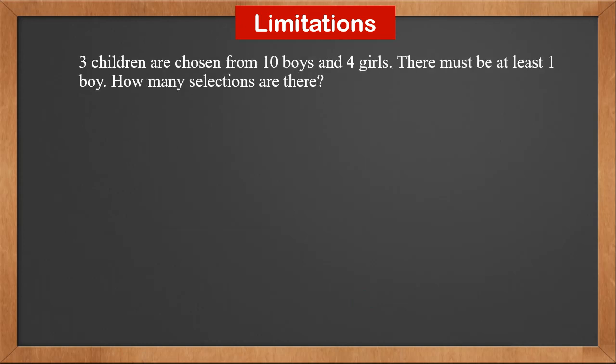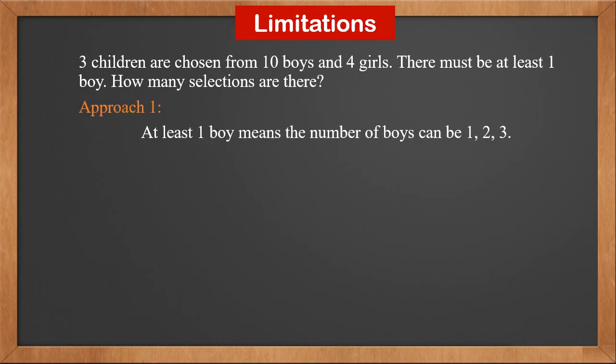Here's another example. 3 children are chosen from 10 boys and 4 girls, and there must be at least 1 boy. How many selections are there? We will look at 2 approaches. Approach 1: at least 1 boy means the number of boys can be 1, 2, or 3. If there is 1 boy, we select 1 boy from 10 boys and 2 girls from 4 girls — this is 10C1 × 4C2. If there are 2 boys, we select 2 boys from 10 boys and 1 girl from 4 girls — this is 10C2 × 4C1.